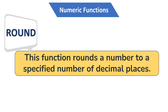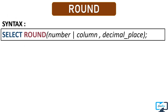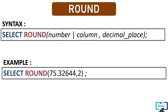Our next numeric function is ROUND. This function is used to round a numeric value to a specific number of decimal places or to the nearest whole number. As parameters we have to pass a numeric value or a column to be rounded, and the number of decimal places to round to. If you do not provide a decimal place, the function will round to the nearest whole number.